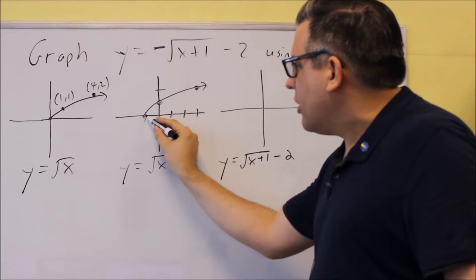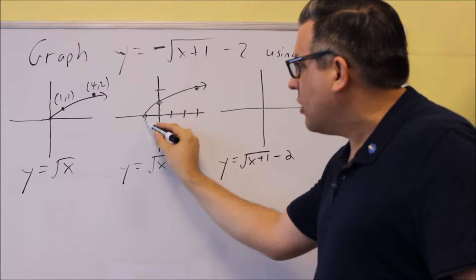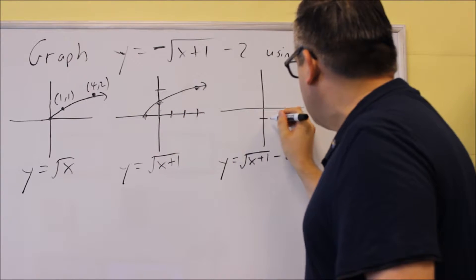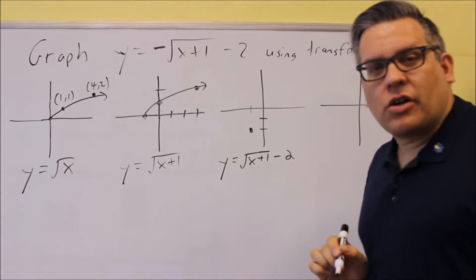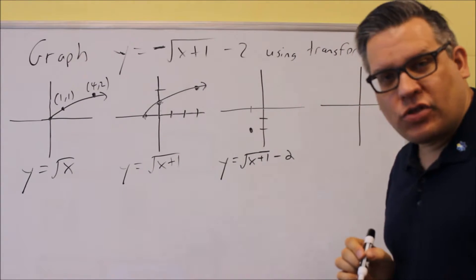So this point that was right here at negative 1, 0, that's going to move down 2 units. When it moves down 2 units, it's now going to start here. So at negative 1 and negative 2, that's where the graph begins.